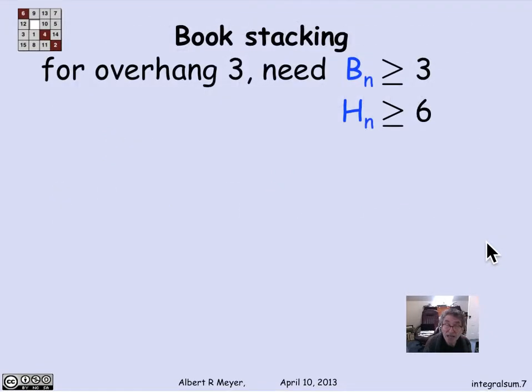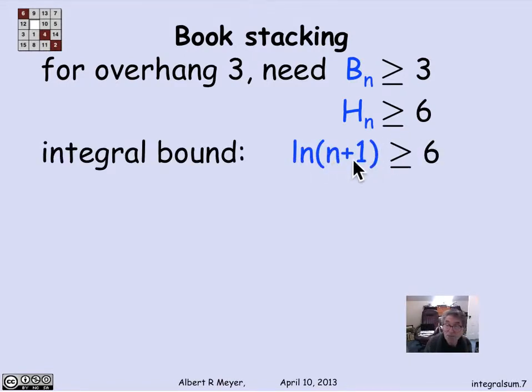So there we have it. The overhang that you need for three books, which is B_n greater than or equal to 3, means that H_n has to be greater than or equal to 6. So by this estimate, I need log(n+1) greater than or equal to 6 in order to get three books out. The back end of the top book is two books past the edge of the table, and the right-hand end of the furthest out book is three book lengths past the edge of the table. My bound tells me that I need n books such that log(n+1) is greater than or equal to 6.